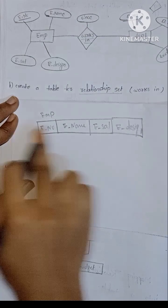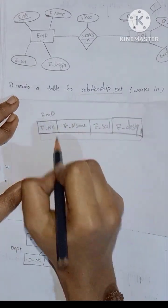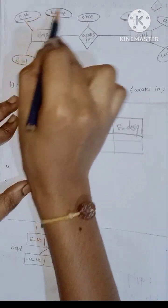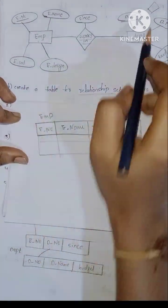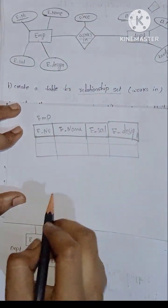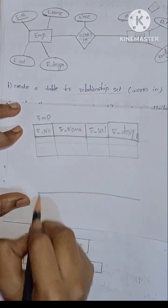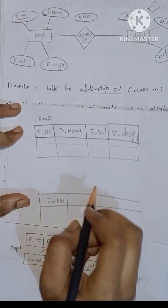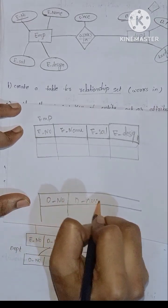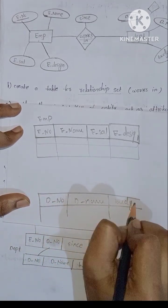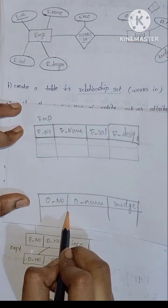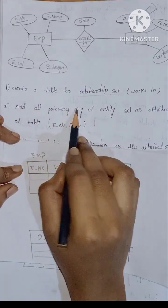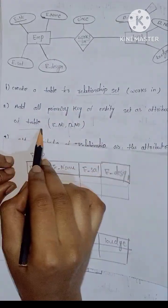Attributes are nothing but columns. Now we have the employee table. The next table is the department table, with attributes: department number, department name, and budget.